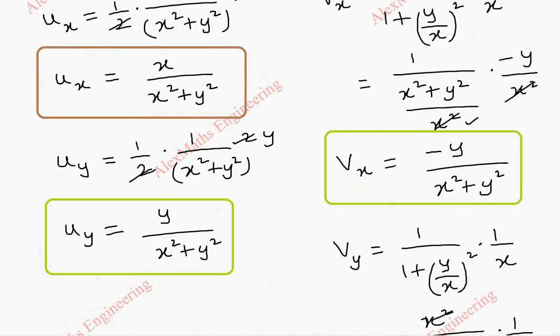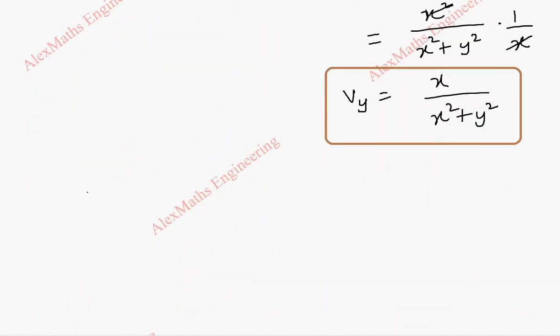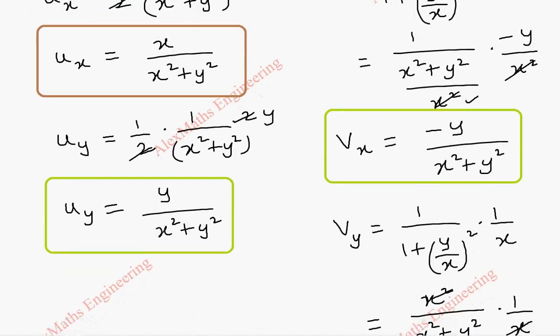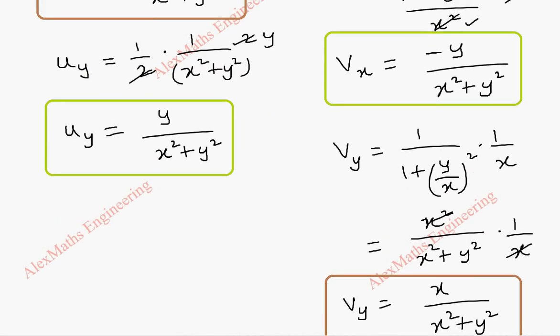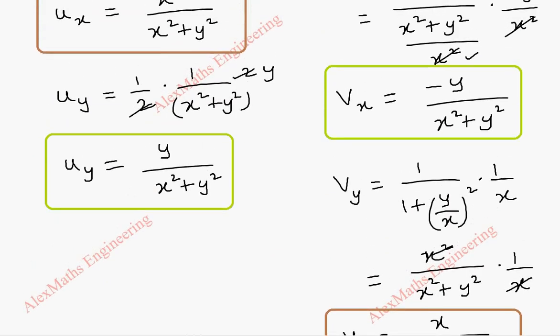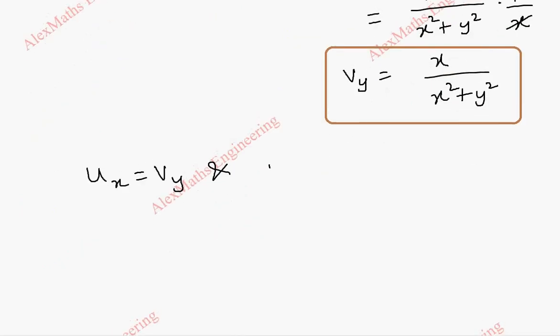And, hence, finally, we can say u_x equal to v_y and u_y is equal to minus v_x. So, we can say CR equations satisfied.